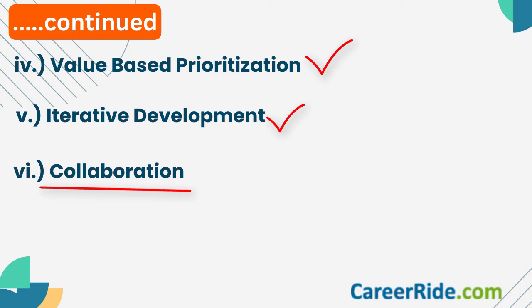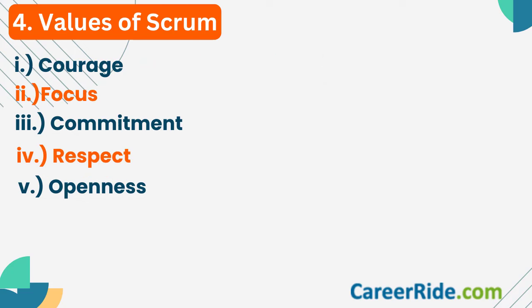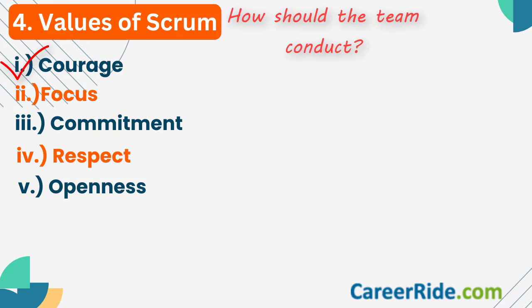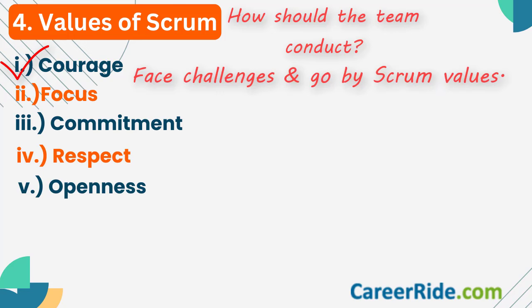The next important topic related to Scrum is its values. Expect a question like: what are the values of Scrum? Scrum values give the team the rules of conduct while working on a Scrum-based project — basically how a Scrum team should behave during the project. The five Scrum values are: number one, courage. The team needs a lot of it to tackle challenging problems and do what's right for the project, even when times are difficult.